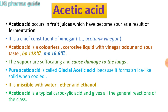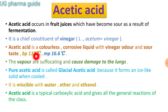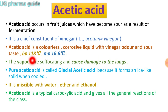Acetic acid occurs in fruit juices which have become sour as a result of fermentation. It is a chief constituent of vinegar. Acetic acid is a colorless liquid with vinegar odor and sour taste. Boiling point is 118 degree Celsius, melting point is 16.6 degree Celsius.